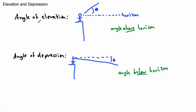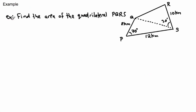In the last video we looked at how to find the area of a triangle. Now we're going to use the law of sines and law of cosines together to find the area of a quadrilateral PQRS. A quadrilateral just means four sides — this weird four-sided shape that's not a square or rectangle. We're given some angles and some sides.